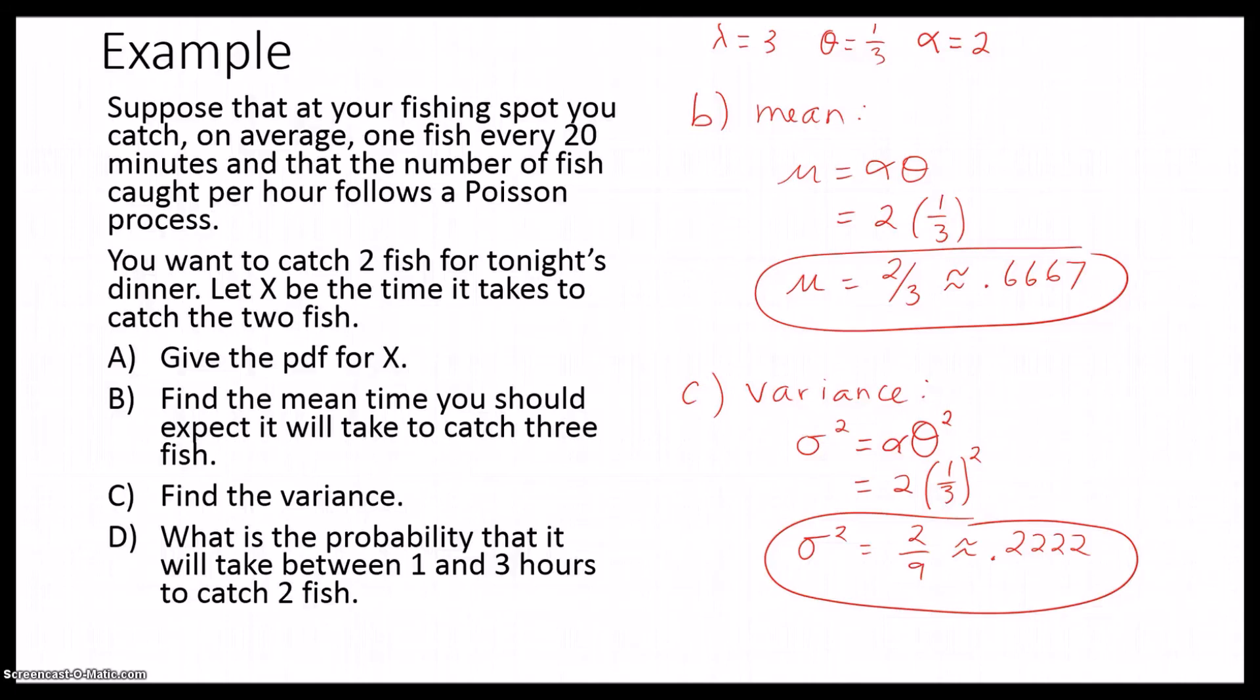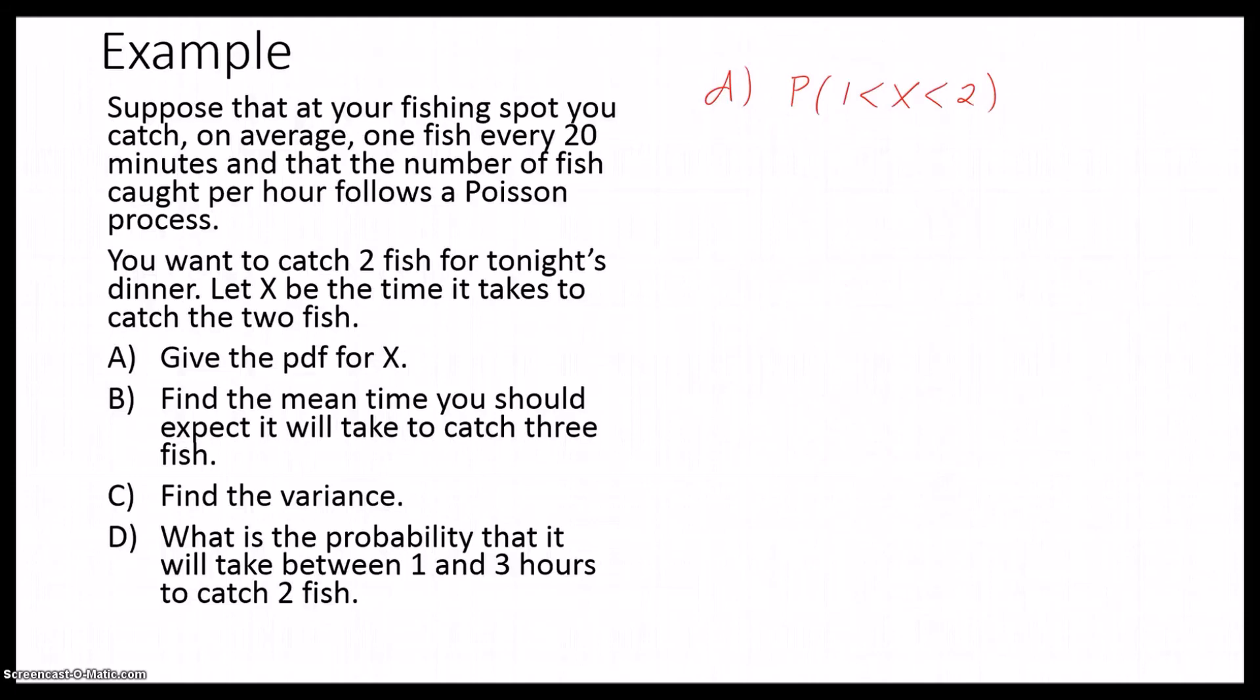And this brings us to part D, where we're going to find the probability that it will take between one and three hours to catch two fish. We have our probability density function, f(x) equals 9x e^(-3x).